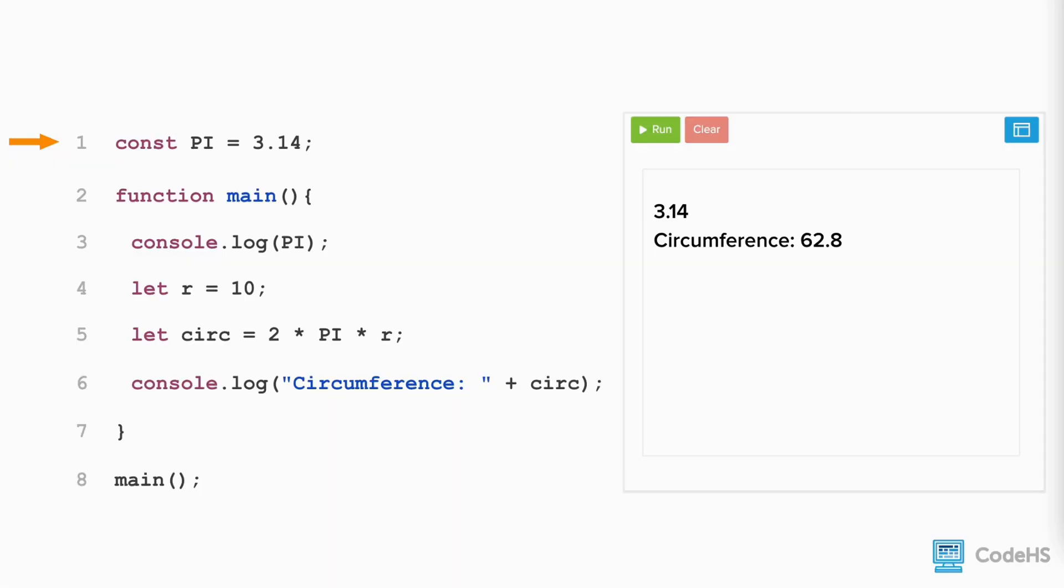To make constants accessible from the main function and other functions we declare in our program, we define constants at the top of the program outside of the main function.